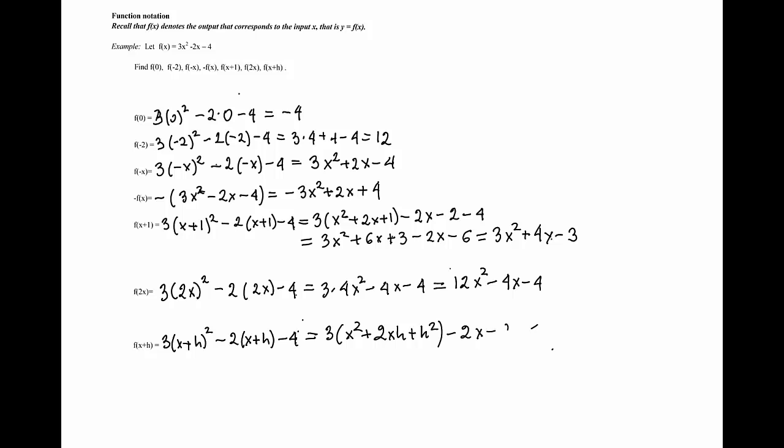Then we will have -2x, -2h, and then -4. Removing the parentheses gives us 3x² + 6xh + 3h² - 2x - 2h - 4. A quick scan shows us that we do not have any like terms. So this is the answer, the output that corresponds to the input x + h.